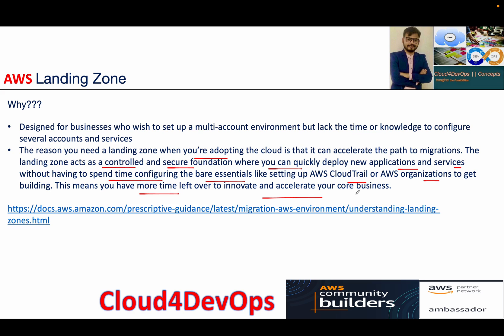I can create different accounts and relate everything to the organization — a security account, log archive account, shared services, network account. But there are manual processes involved. You can also automate account creation with Lambda and Service Catalog, but with Landing Zone you just provide a simple set of configurations and accounts get set up with best practices, including guardrails pushed out to each account.